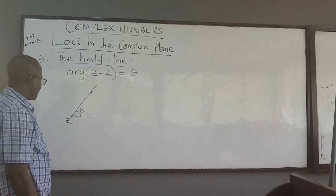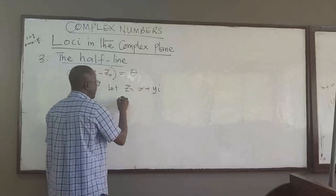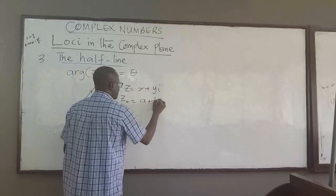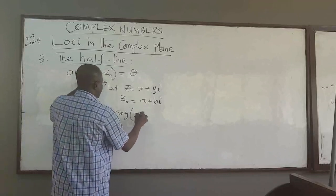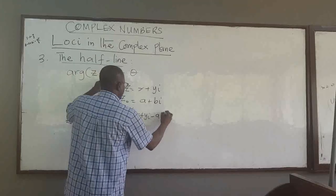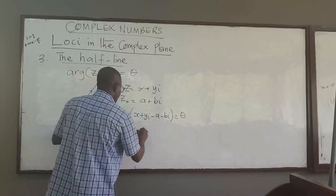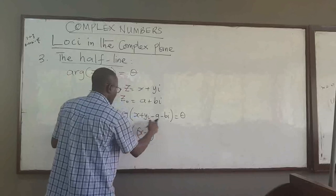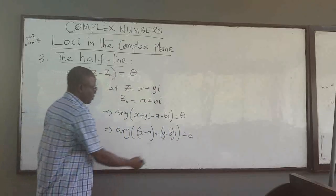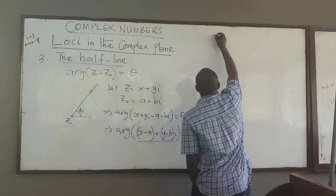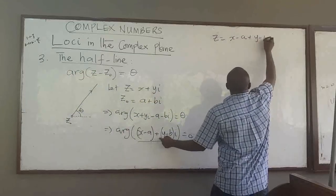So how do we actually know that this is a line? As usual, you can let z equal x plus yi, and let z naught be the point a plus bi. If you plug it in, you get the argument of x plus yi minus a minus bi equals theta. This means the argument of (x minus a) plus (y minus b)i equals theta.